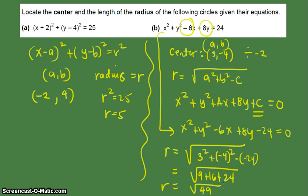So the radius is the square root of 49 or 7. So the center was obtained from dividing by negative 2 and the radius was obtained by using the formula square root of a squared plus b squared minus c which is 7. Okay, so that's how you find the center and radius of the circle given the standard form and given the general form.